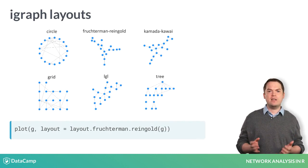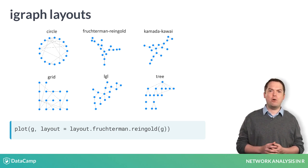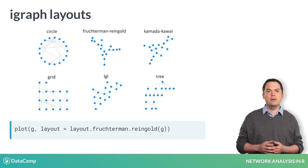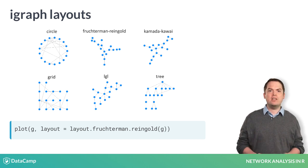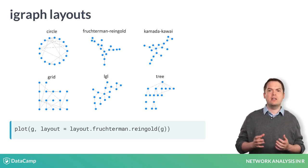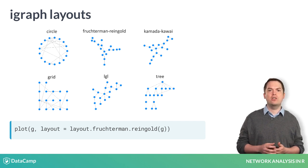Here, the same network graph is depicted using some of the different layout options provided by iGraph. In iGraph, you can change the layout by adding the layout argument to the plot function. When creating your own network, it is worth trying different layouts to identify which allows key network information to be communicated most efficiently.